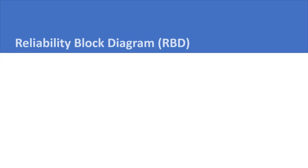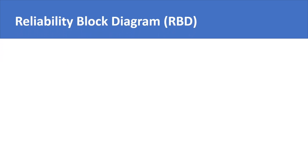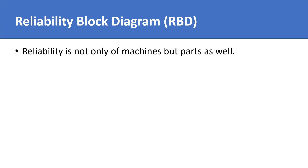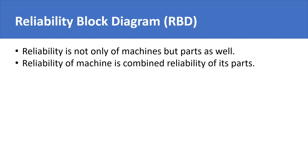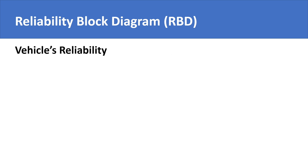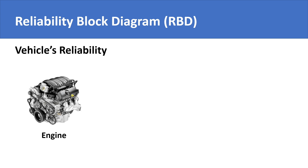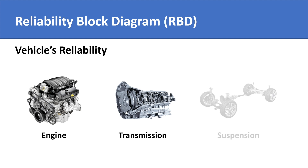Reliability is a concept that is not only applied to machines as a whole but also to machine components. So in a complex machine or system, reliability will be the combined reliability of its parts. For example, a vehicle's reliability will actually be the combined reliability of its engine, gearbox,